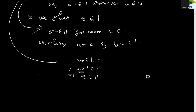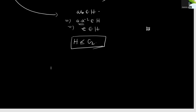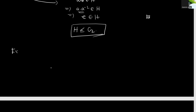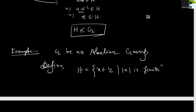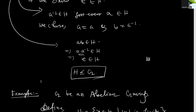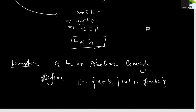Therefore, H is a subgroup of G. Now for the example: let G be an abelian group, and define H as the set of all elements belonging to G such that the order of the element is finite. Now we apply the two-step subgroup test.